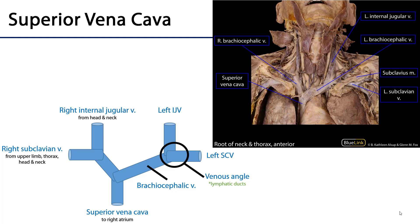The major veins of the superior mediastinum and thorax are a beautiful conduit returning blood from the head and neck, upper limbs, and the thorax. Conceptually it's important to understand that the superior vena cava is going to drain all of these areas, and it is supplied by the brachiocephalic veins.